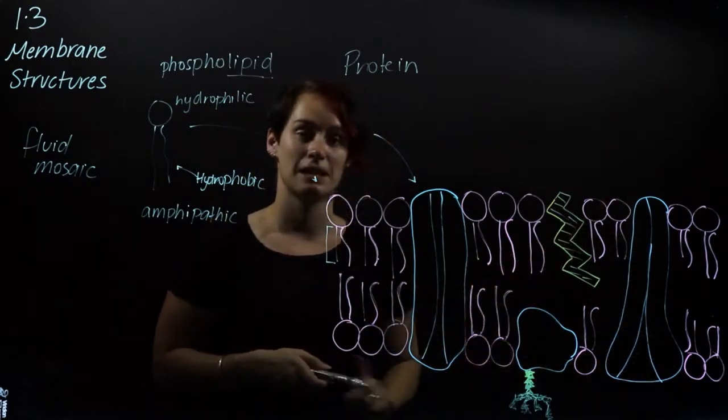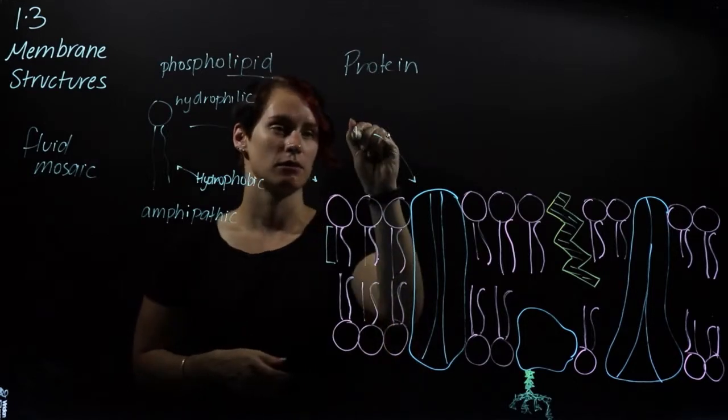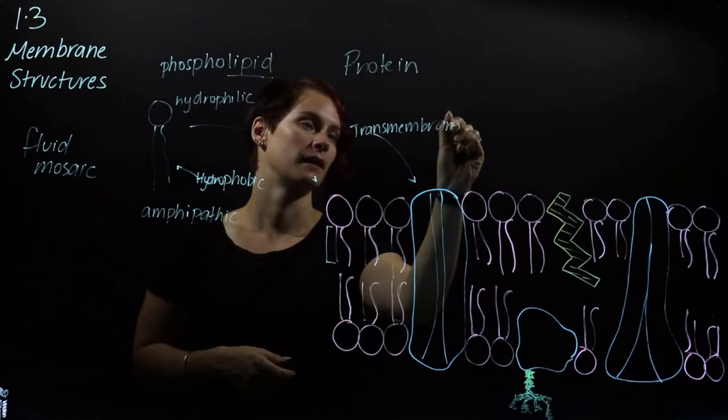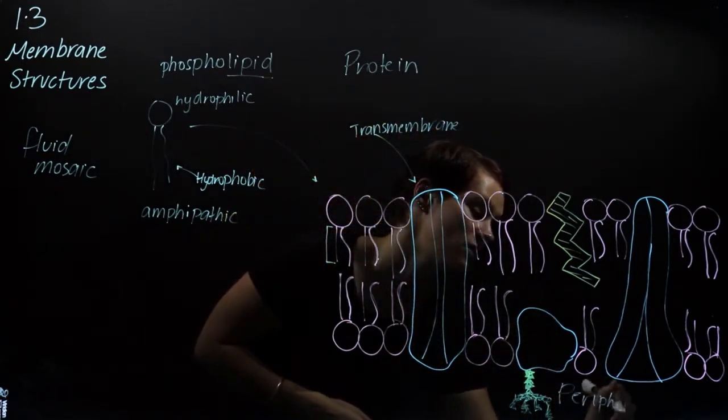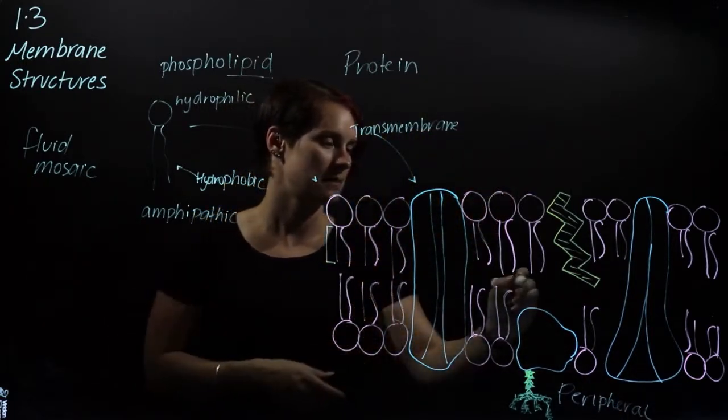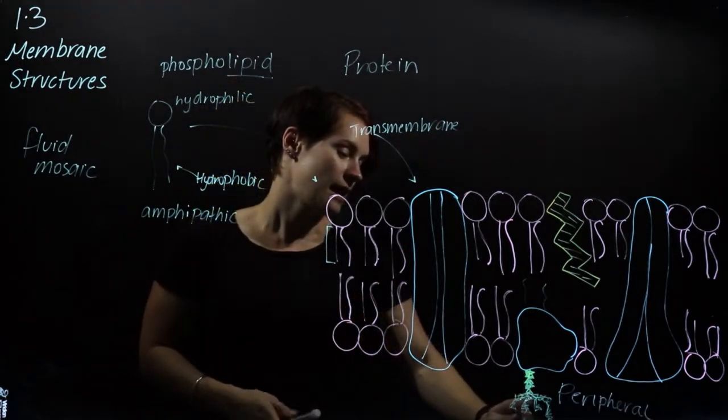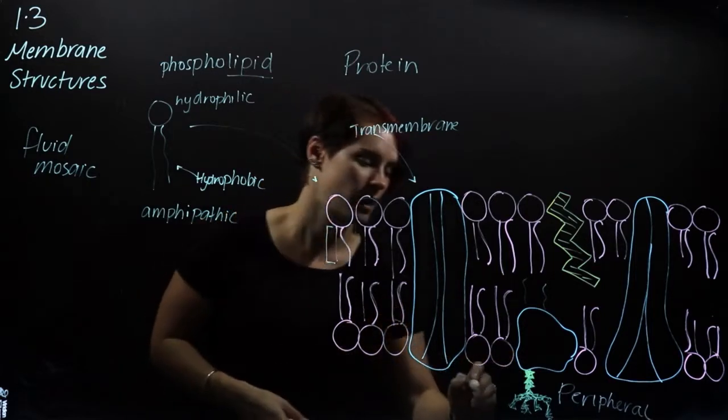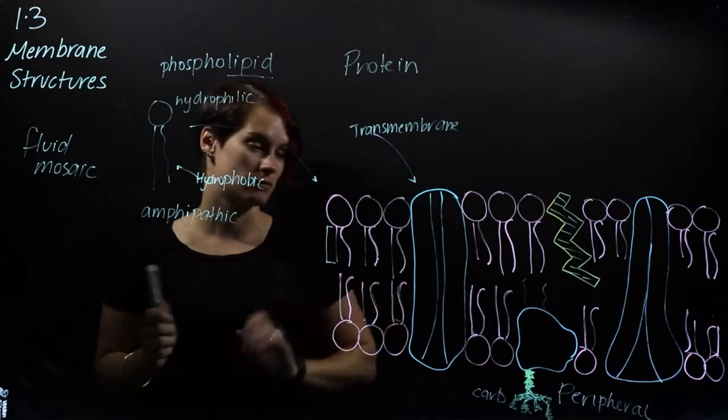This is another transmembrane protein, and this is known as a peripheral. So we've got transmembrane here and this is a peripheral because it is on the periphery. Now some of these peripheral proteins can be anchored chemically inside the membrane, and they can also have these things called carbohydrates that are on the outside and they're used for cell to cell recognition.